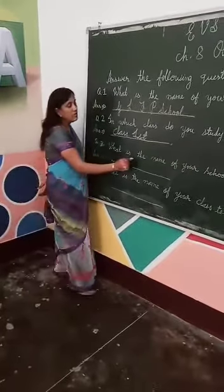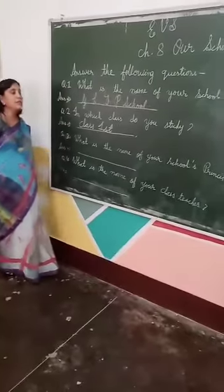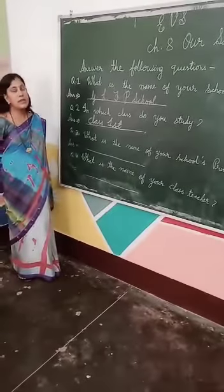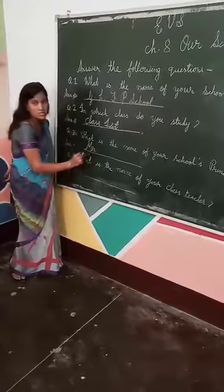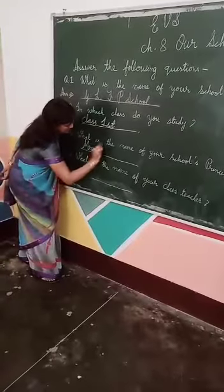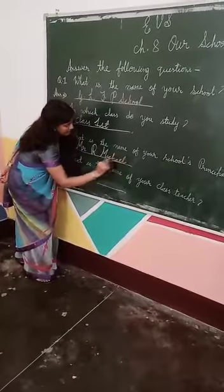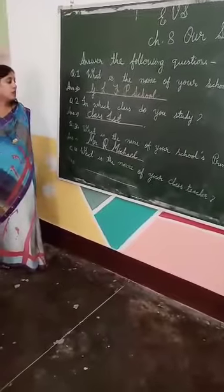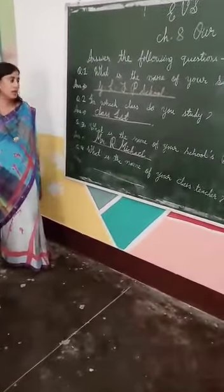Next: what is the name of your school's principal? Aapke school ke principal sahab ka name kya hai? The principal's name is Mr. R. Michael — M-I-C-H-A-E-L. If anyone asks you, what is the name of your school principal, we will say Mr. R. Michael. Clear students?